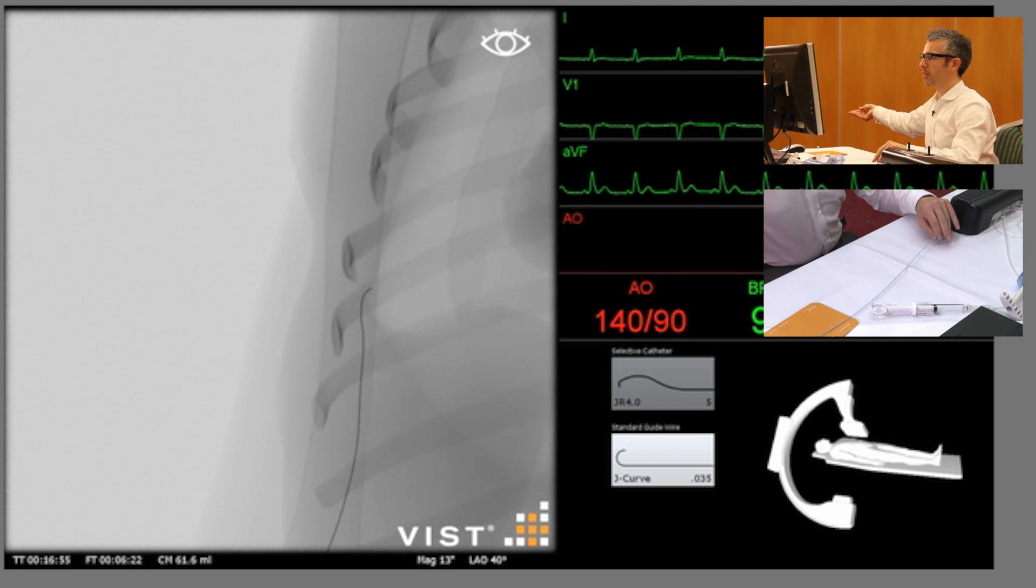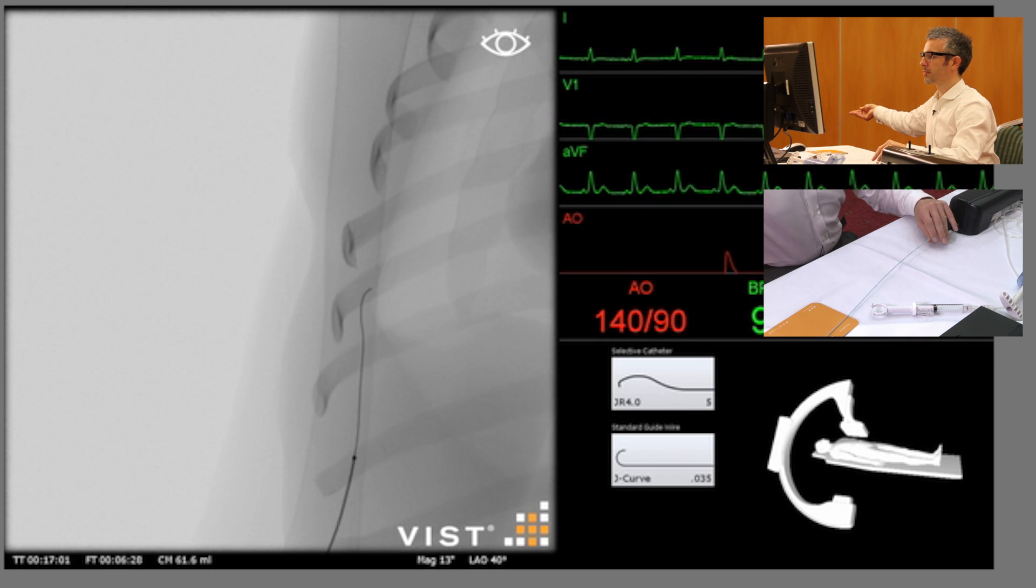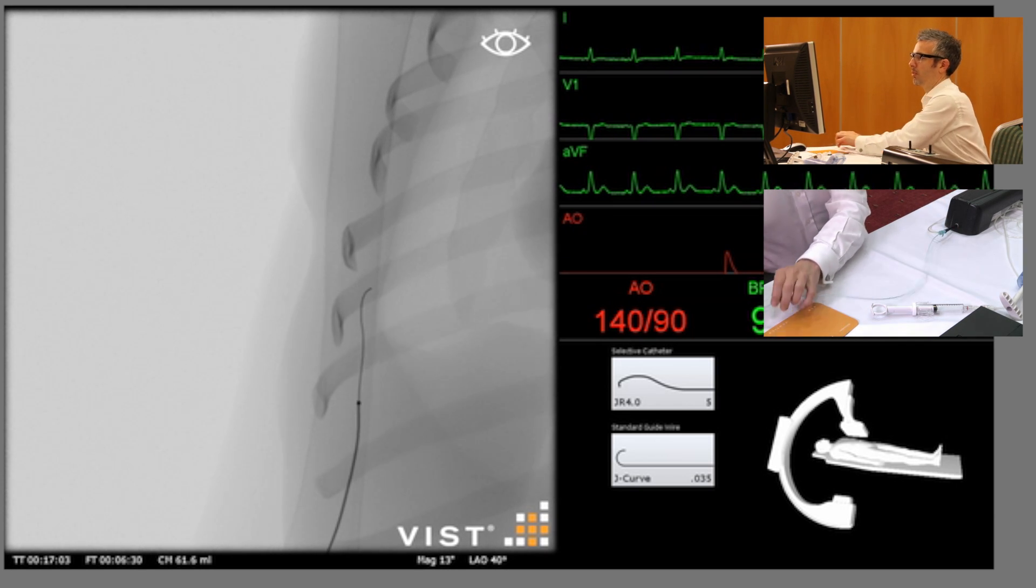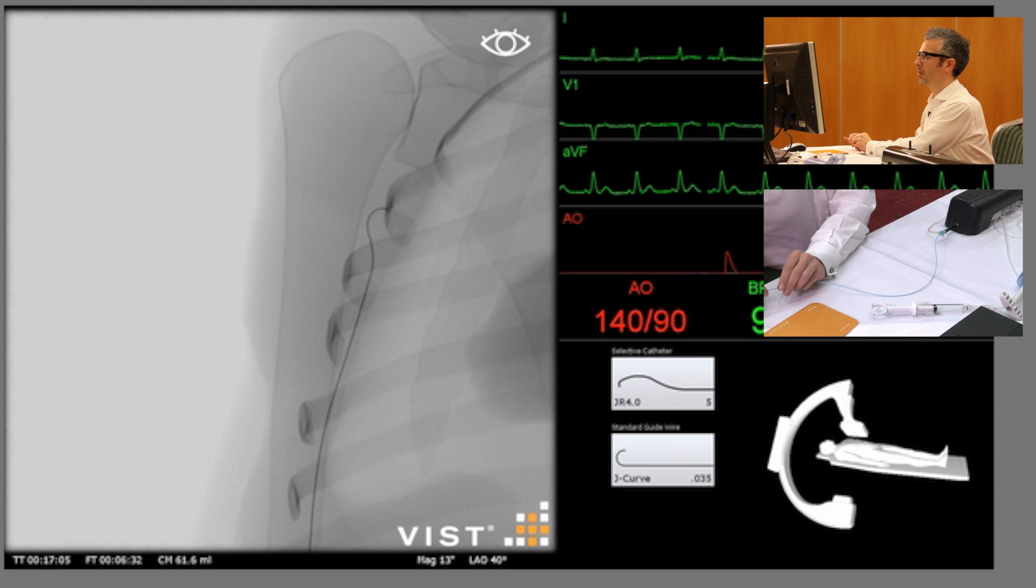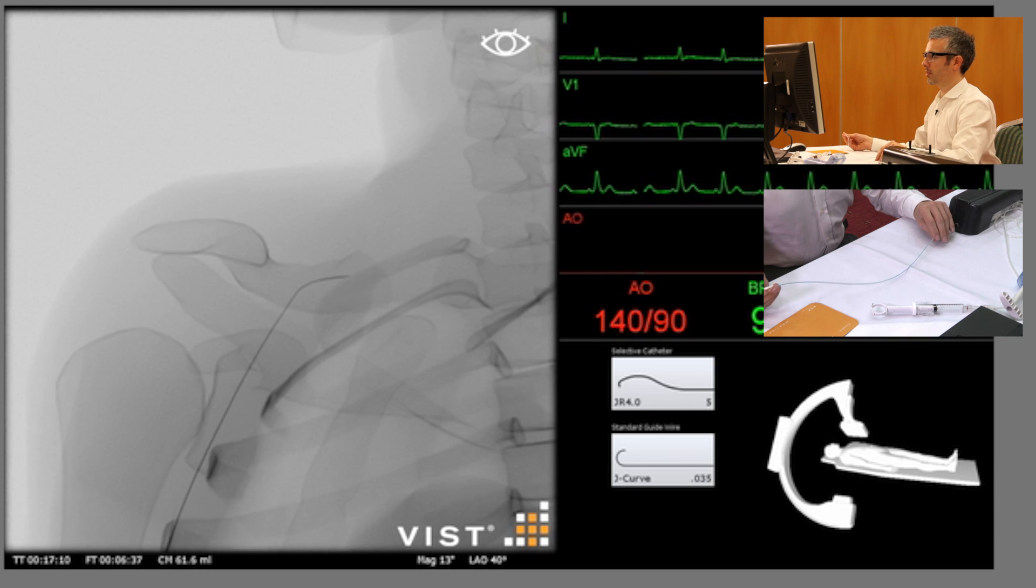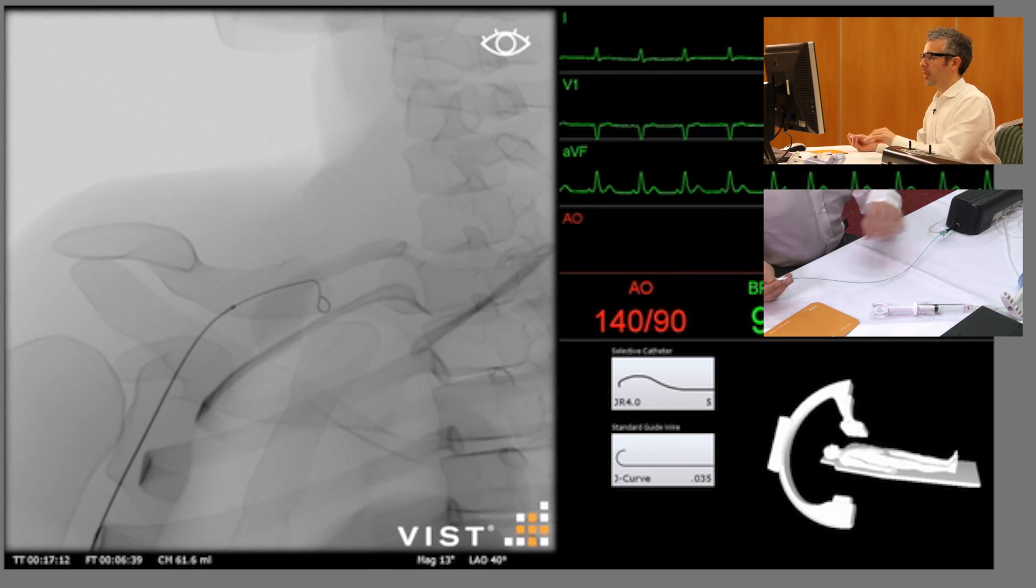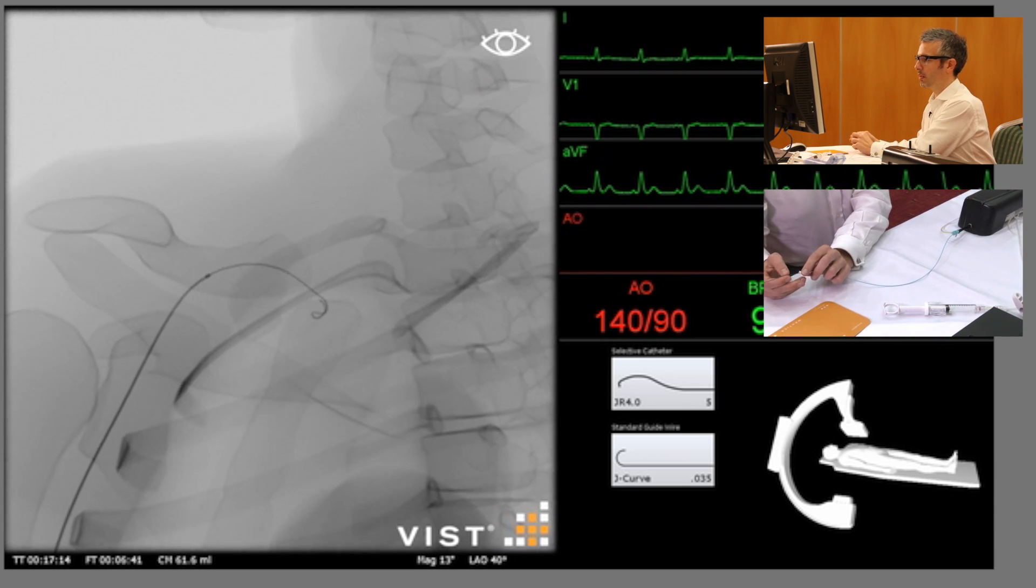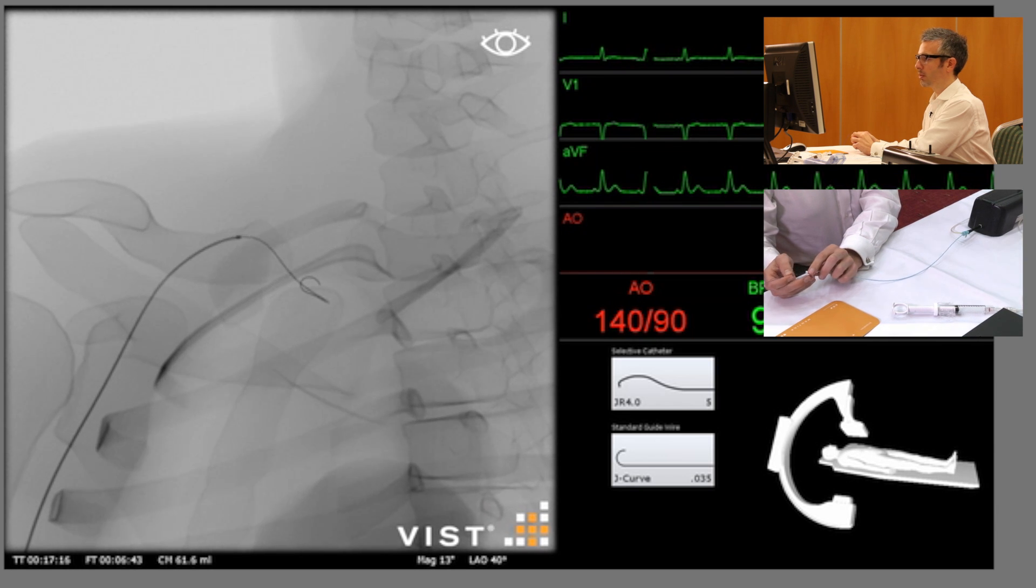The view here looks a little strange because we've got the camera preset into an LAO view but that will help us as we come round into the subclavian artery, past the head and neck vessels, because this will allow us to see whether we're going into the ascending or the descending aorta.